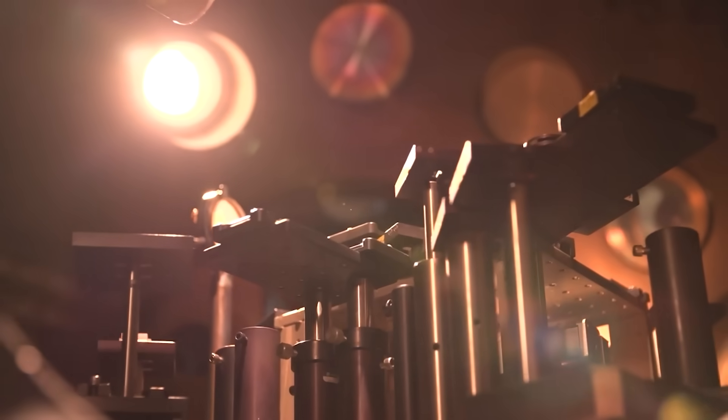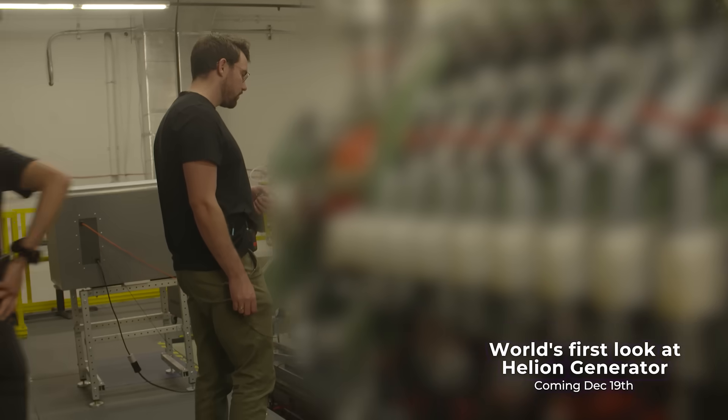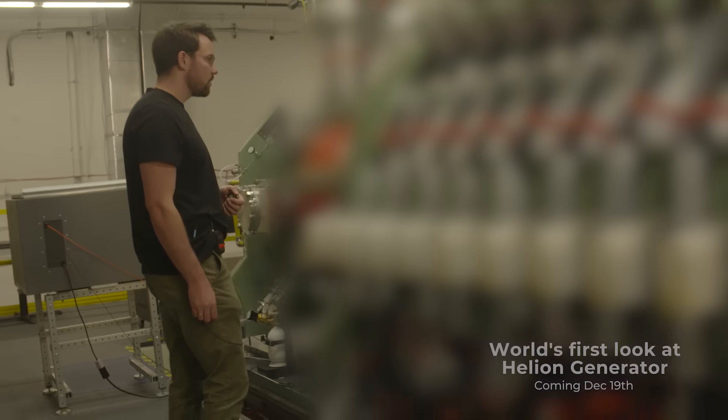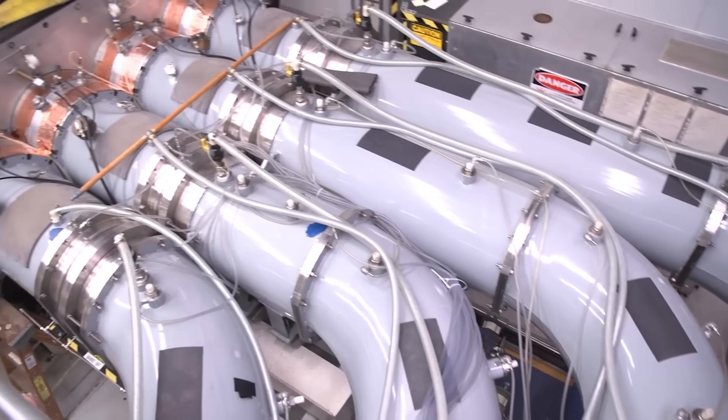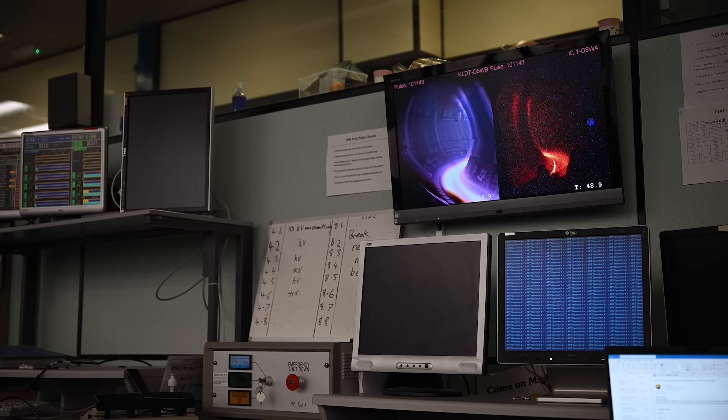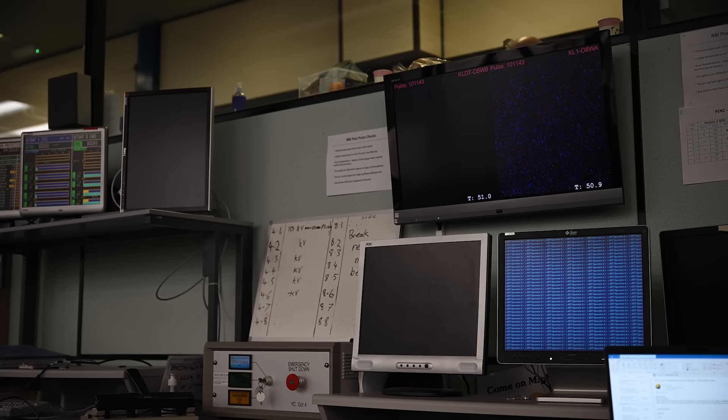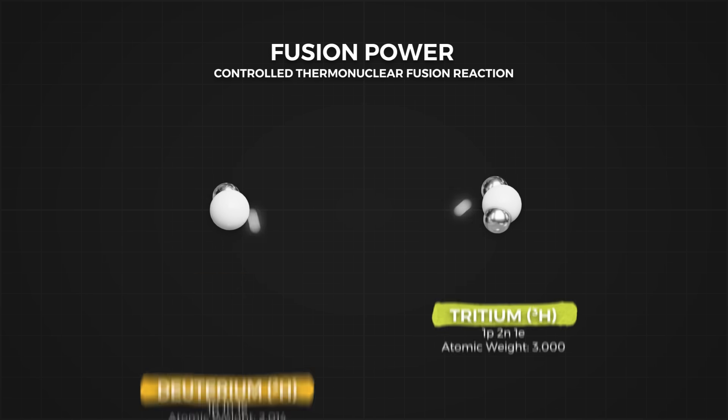We have successfully created many fusion reactions here on Earth. In fact, I witnessed the bright pink flashes of fusion myself while visiting Helion recently. We know how to achieve fusion. The problem we are now trying to solve is lowering the energy we need to input, while maximizing the energy we can extract. So, step 1, we need fuels that require less energy input, that release more energy. That's where deuterium and tritium come in.